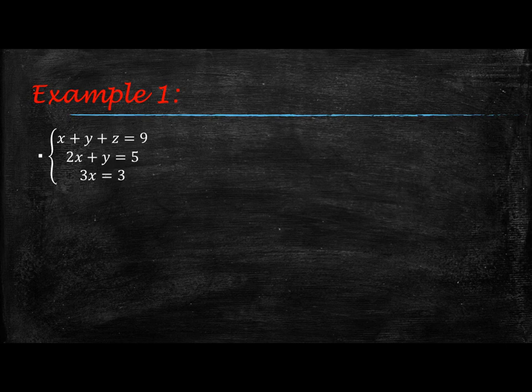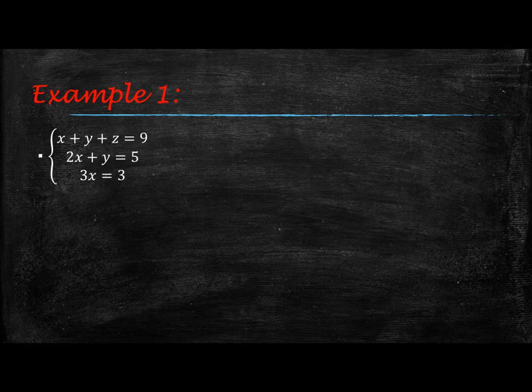So this first example is not that difficult. We start with x plus y plus z equals 9, 2x plus y equals 5, and 3x equals 3. In this particular example, we have one equation that is written with one variable, so we're going to use that equation to solve for that variable. We're going to divide both sides by 3 in this bottom equation, and that's going to allow us to solve for x, so x is equal to 1.